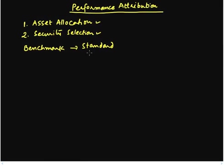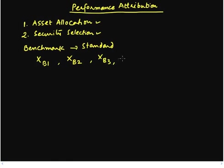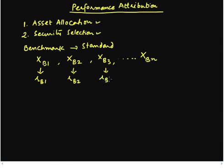Likewise, other asset classes would also have benchmarks. Let us say we allocate XB1 proportion of our funds to asset class one, where X is the weight and B1 is the benchmark for asset class one. Likewise, we could invest another proportion to asset class two, and yet another proportion to asset class three, and so on depending on how many asset classes we are contemplating. Let's also say that the return offered by the benchmark for the first asset class is RB1, for the second it's RB2, for the third it's RB3, and so on up to RBN.